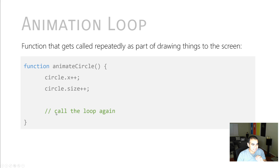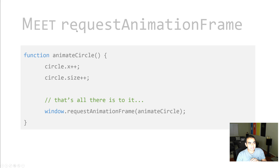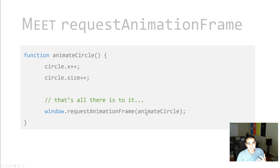The way you call the function repeatedly is by using the requestAnimationFrame function. On your window object, you have requestAnimationFrame, and it takes a callback — the name of a function it's going to call as part of creating the loop. Since animateCircle is the loop you want to call, you pass the same function name into the requestAnimationFrame function.